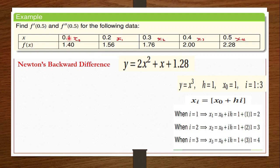This is how we find the f(x) values. If I put 0.1 into the equation, I get 1.4. If I put 0.2 into the equation, I get 1.56, and it continues on to x4. That is how we find this table if values are not given.